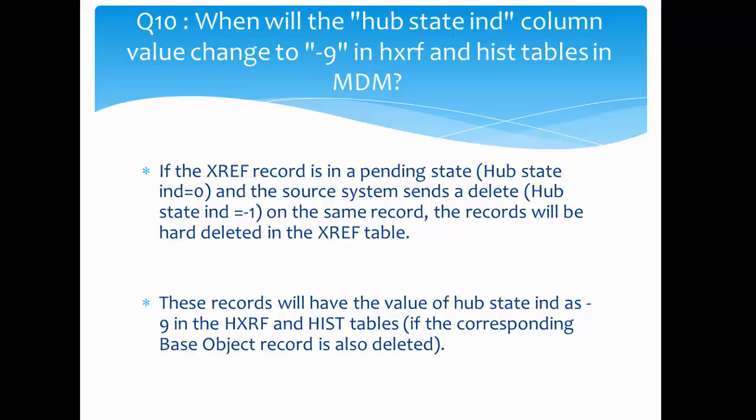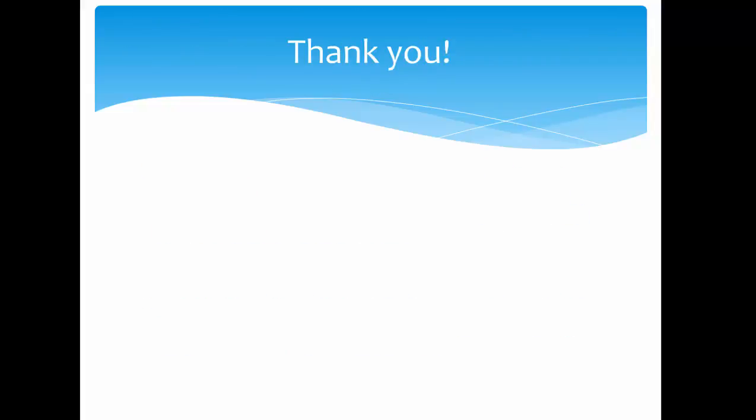...when the same source system sends a delete on that pending record, the record will be hard-deleted — meaning physically deleted — from the XREF table. Once the pending record is physically deleted from the XREF, the history XREF and history table are populated with a minus nine (-9) value for the hub state indicator. This minus nine value is set only if the corresponding base object record is also deleted — meaning there is no other active XREF record for that record.